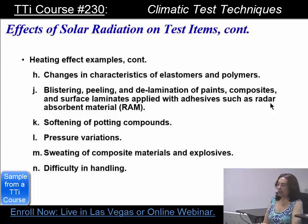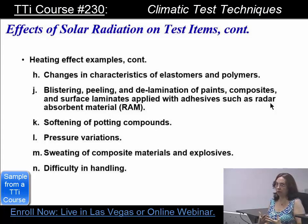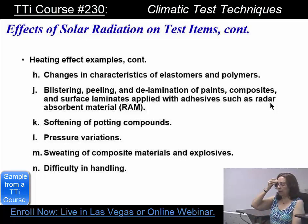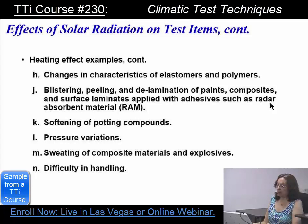You can have changes in the characteristics of elastomers and polymers, blistering, peeling, and delamination of paints, composites, and surface laminates applied with adhesive — such as radar absorbent material. Believe it or not, Kevlar can be damaged if you leave it out in the sun too long. Even though it has some type of cloth over it, the Kevlar itself will stop having the same protective quality as before. So if you have to wear a Kevlar vest, store it out of the sunlight — don't just take it off and throw it on the ground. Pressure variations can also easily happen because of non-uniform heating, including sweating of composite materials and explosives, and difficulty in handling.